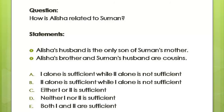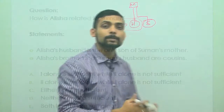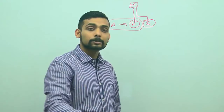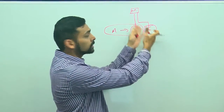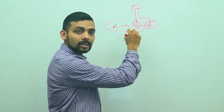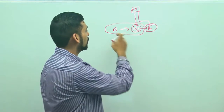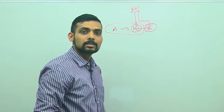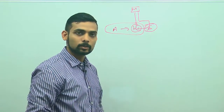Now let me quickly plot this. Alicia's husband is the only son of Suman's mother — so Suman's mother and Alicia's husband's mother are the same. That means Suman and Alicia's husband are siblings. And since Alicia's husband is the only son of Suman's mother, Suman has to be the daughter. So these two are brother and sister — Alicia's husband and Suman are brother and sister. Therefore, Alicia is Suman's sister-in-law. So I can answer this using statement 1 alone.